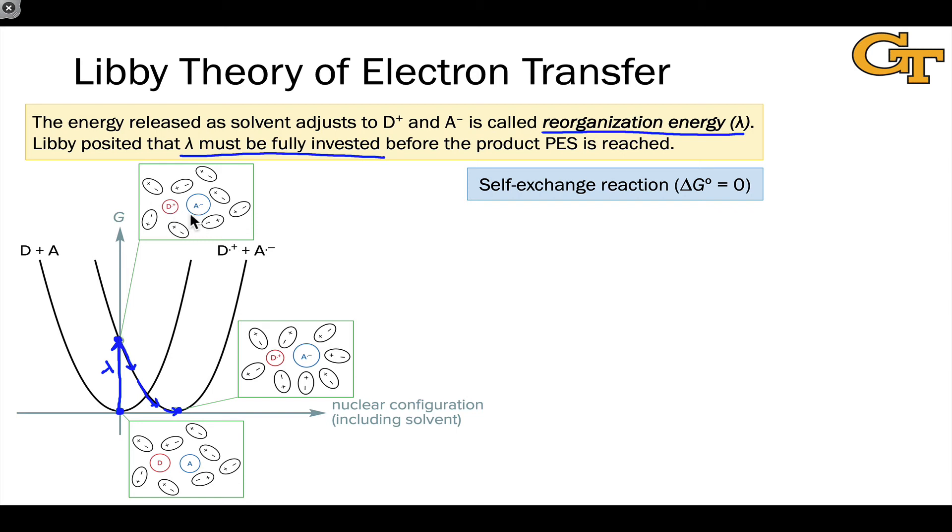The activation energy for electron transfer is the reorganization energy. Electron transfer in an inner sphere sense happens first. We have to get above that reorganization energy barrier before we can get down to the product D dot plus and A dot minus.